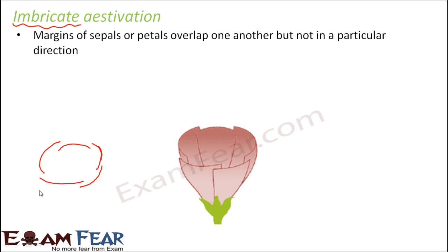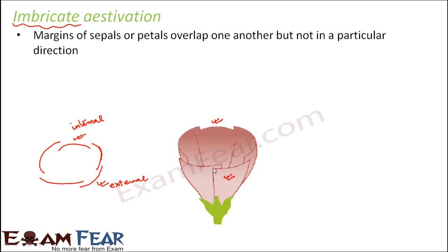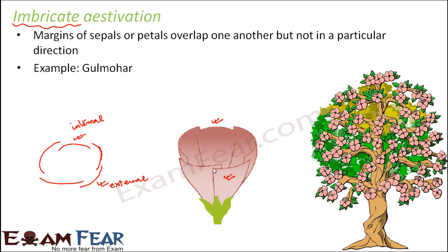In imbricate estivation, two types of petals are possible: one petal may be overlapped on both its margins, making it an internal petal, whereas another petal may be overlapping its neighbors on both its margins, making it an external petal. So imbricate estivation consists of internal and external petals. You can see in this flower that one petal is internal — overlapped on both margins — while another is external, overlapping its neighbors on both sides. The example of this kind of estivation is the gulmohar flower.